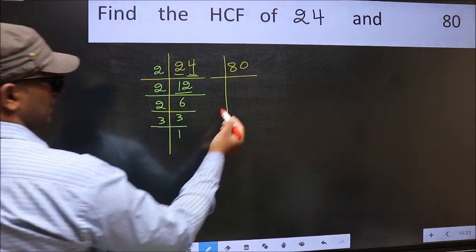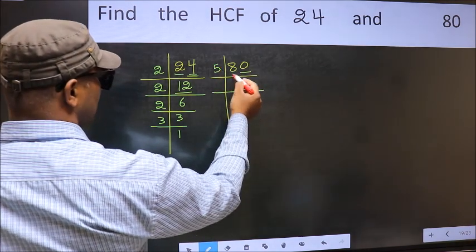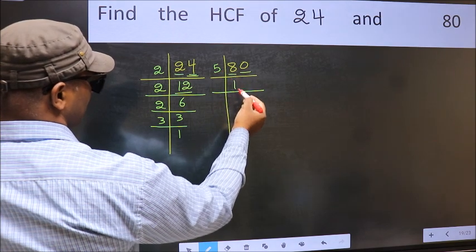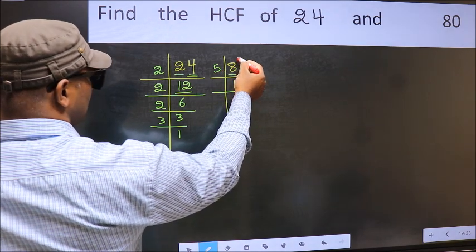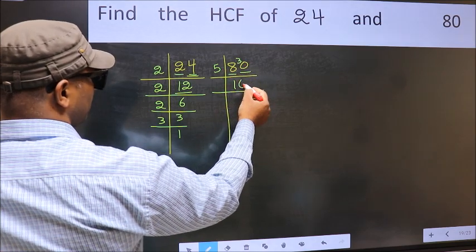Now the other number. Last digit 0, so take 5. First number 8. A number close to 8 in the 5 table is 5 times 1 is 5. 8 minus 5 is 3, 3 carried forward to make 30. When do we get 30 in the 5 table? 5 times 6 is 30.